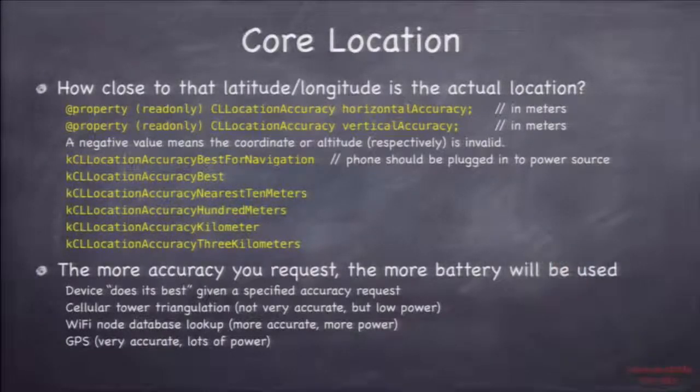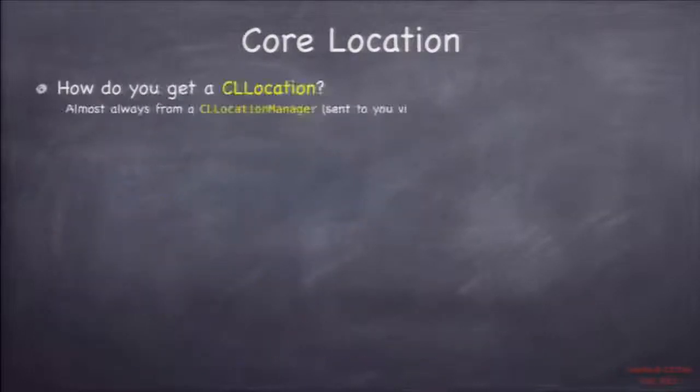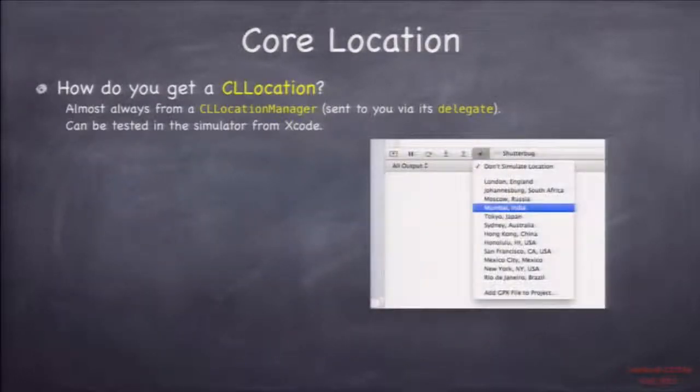But however the location was found, it will also report to you what accuracy it used, both in terms of horizontally and then altitude wise vertically. Understand that accuracy means power. The more accuracy you ask for, the more power you're going to use. So ask for the least accuracy your application can deal with so that you use as little power as possible. Very important point. Some other properties there, I'm not really going to talk about them. You have the slide for them, obvious things. Speed is calculated by seeing all the points that you're moving through time and it can calculate your speed.